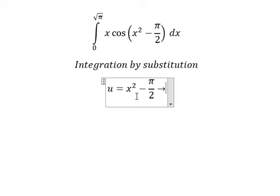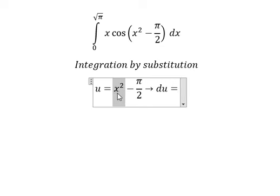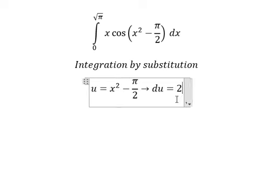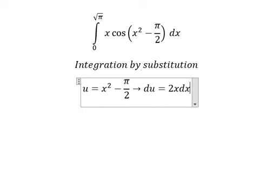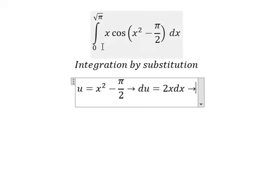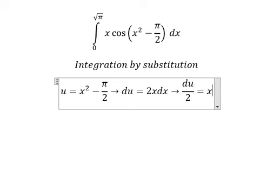We need to do the first derivative for both sides. This one is about 2x, this one is the constant so you got zero. Because we don't have number two, we need to divide both sides by number two.